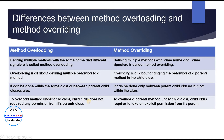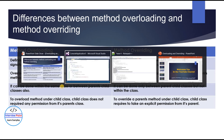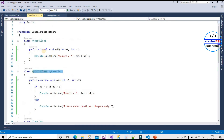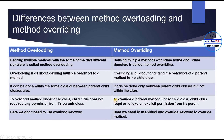The fourth difference: to overload a method in a child class, the child class does not require any permission from its parent class. But to override a parent's method in the child class, the child class requires explicit permission from the parent. This is done using the virtual keyword in the parent class method and the override keyword in the child class method. Without this permission, we cannot override the method.